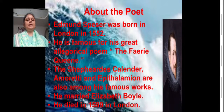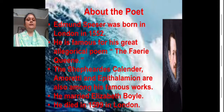Spencer was born in London in 1552. There is some ambiguity regarding his birth date, but the year was 1552. He is very famous for his great allegorical poem, which is epical in nature, entitled 'The Fairy Queen.' Apart from The Fairy Queen, he has also penned various sonnet collections, especially Amoretti and Epithalamion. The Shepherd's Calendar is also among his famous works. He married Elizabeth Boyle and he died in 1599 in London.